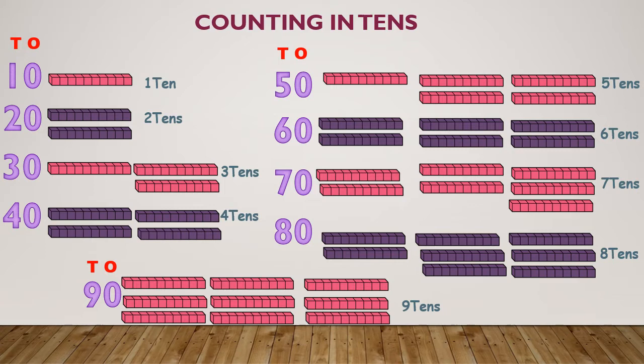We are going to stop at 90 today. Now let's look at 10. Next to 10, there is a strip of 10 blocks. So we say it's 1 ten. If it is 1 ten, we put the 1 under the tens column.